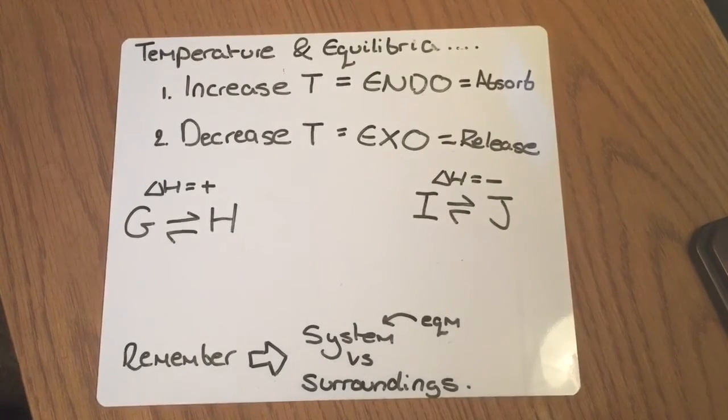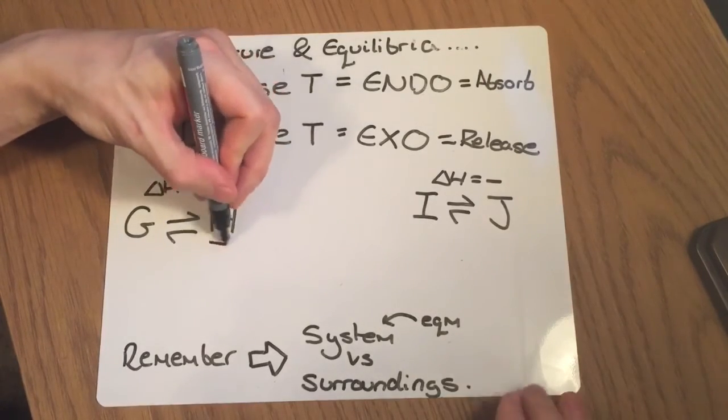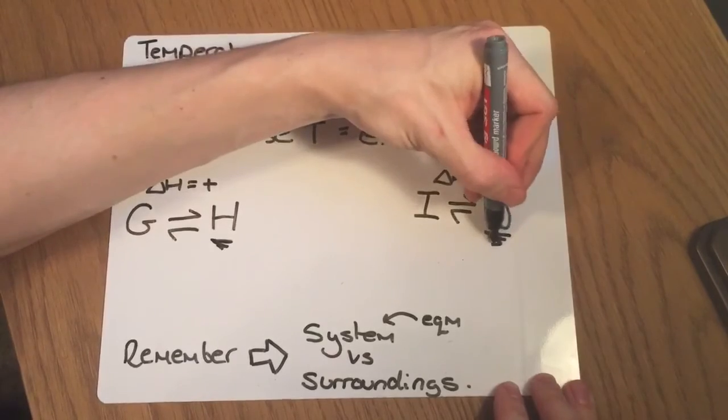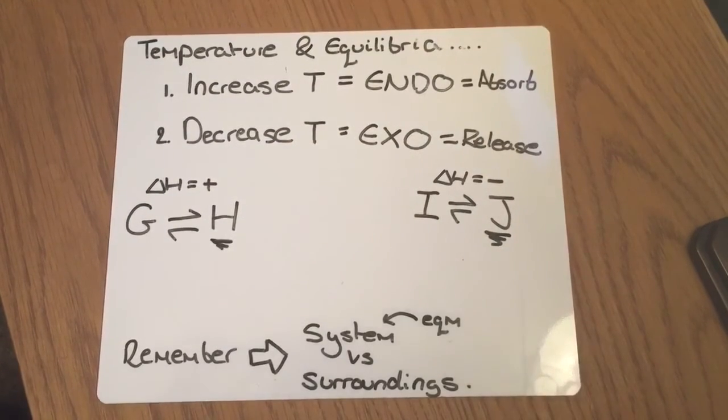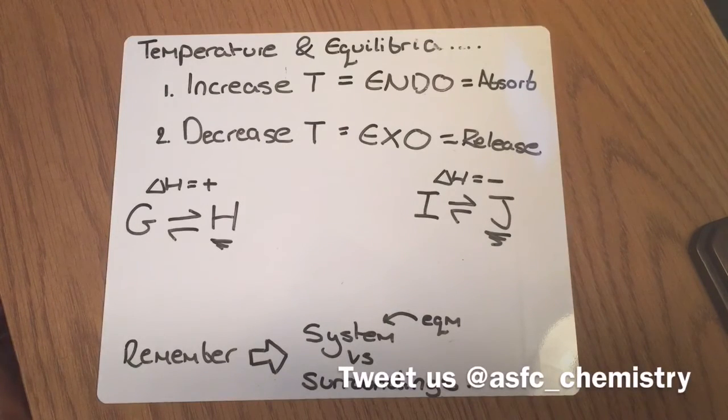I hope this clears up some of the finer points of how a temperature affects the position of an equilibrium. Don't forget that we still class H and J here as yield. And what they might ask in the exam is not which way does the equilibrium shift, but how are the yields of H or J affected by the change in temperature. Figure out which way it shifts first and then apply that.